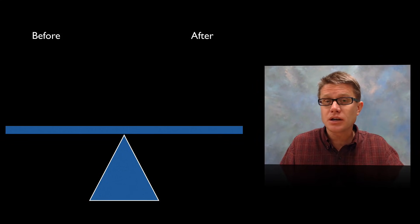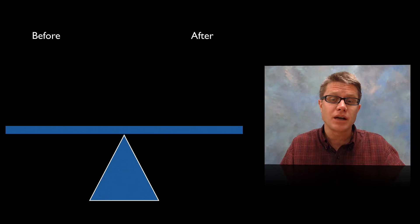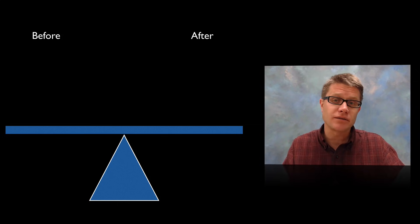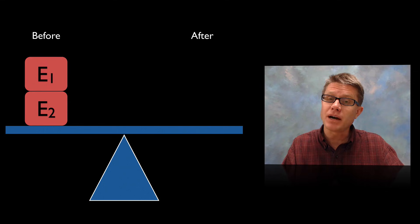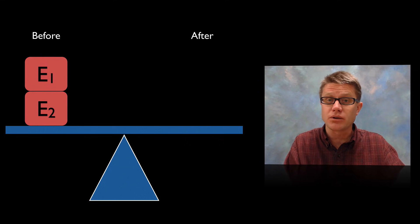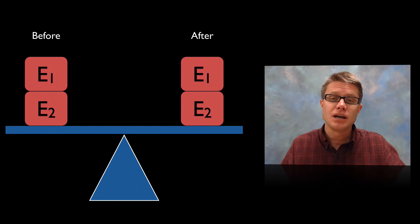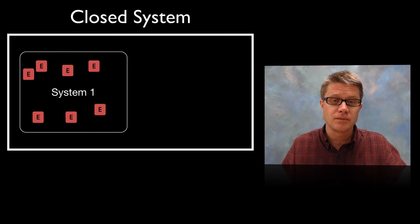If we're talking about conservation, a good way to think about that is a teeter totter. We've got a before and an after. If we've got two systems, system 1 and system 2, the amount of energy that they have before interacting with each other has to be exactly the same as the energy that they have after.